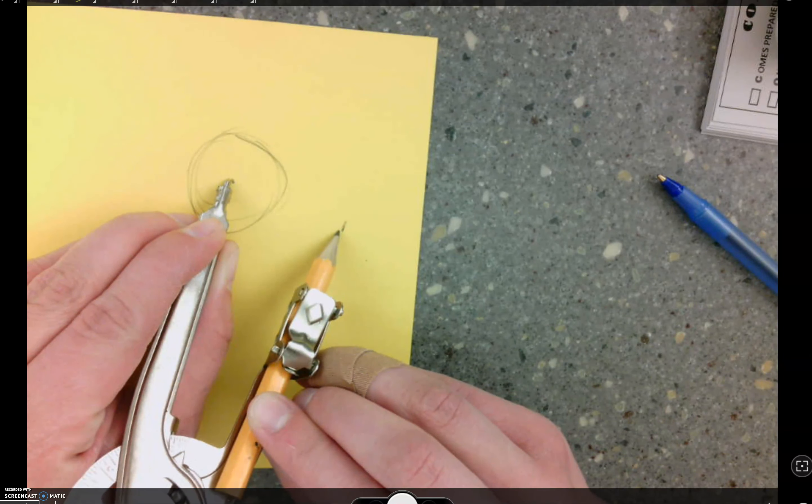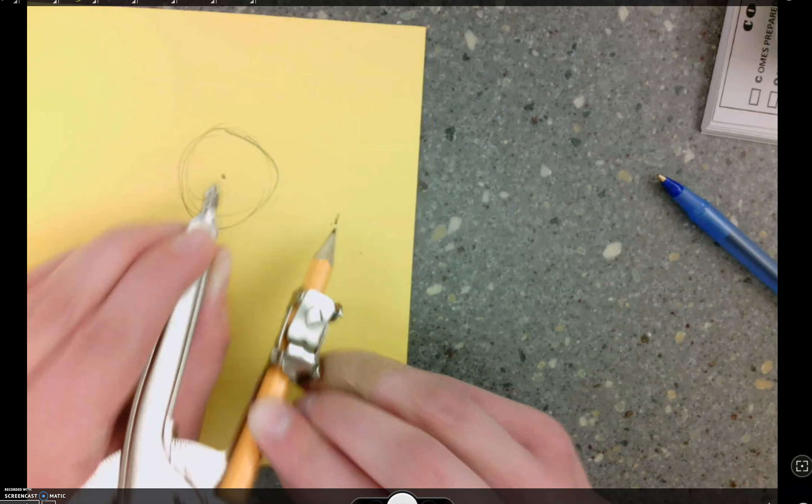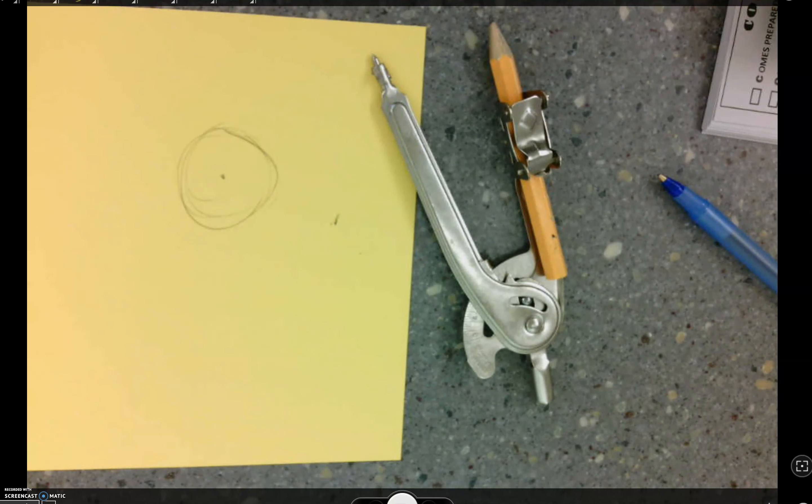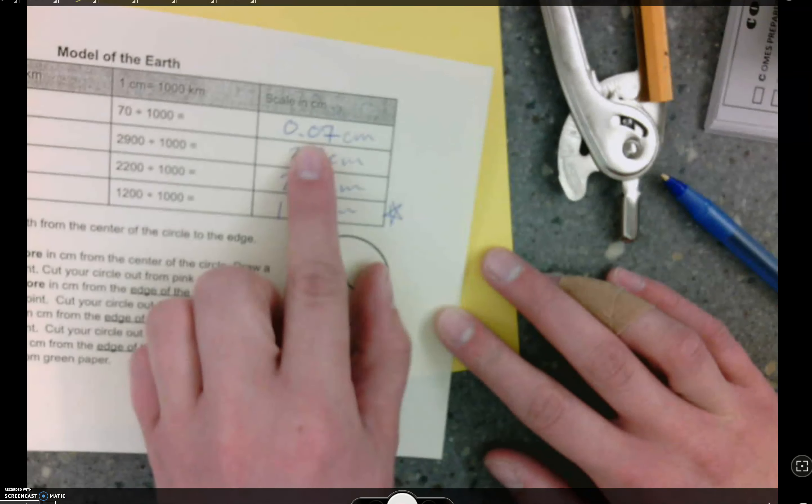Nod or shake. Do you understand all these instructions? Okay. Awesome. Do you have any questions before we start? Okay. So there's certain colors for each one. So you're going to use the pink paper for the inner core, the yellow paper for the outer core, and then blue for the mantle, and green for the crust. Okay? Now the crust is super, super, super thin compared to the whole rest of the earth. Okay? The crust in our model is going to be 0.07 centimeters.